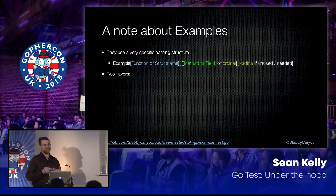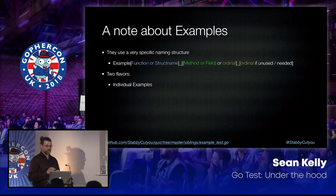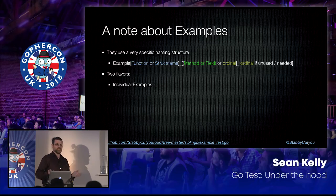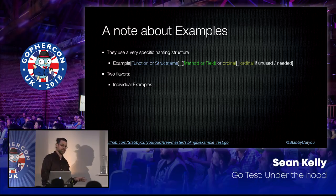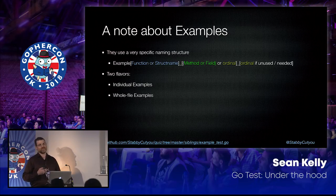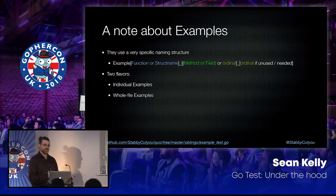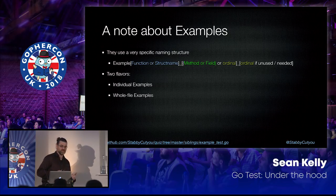There are two flavors of examples. One is an individual example - it just stands alone, and you can have multiple individual examples in a single test file. The other is whole file examples, and this is where things get tricky because you have to do it very explicitly correctly. If you don't do everything exactly right, Go is typically not happy with you, and Go test is not different in this regard.